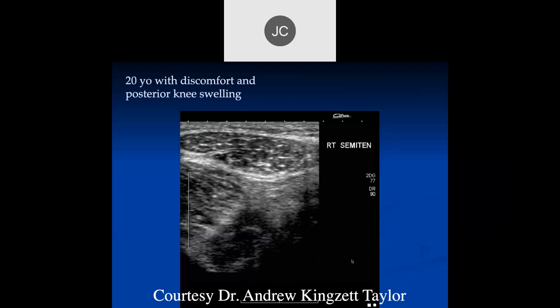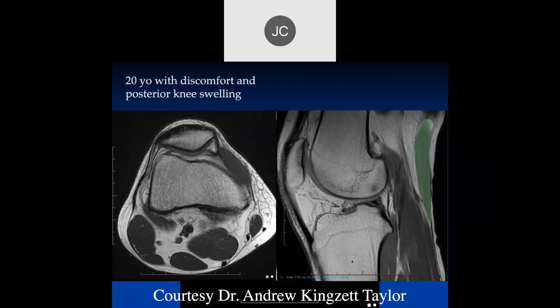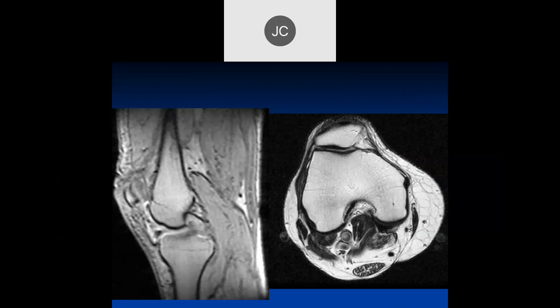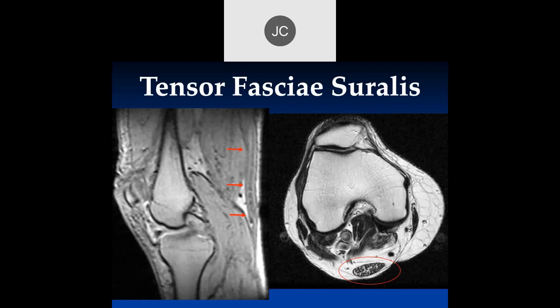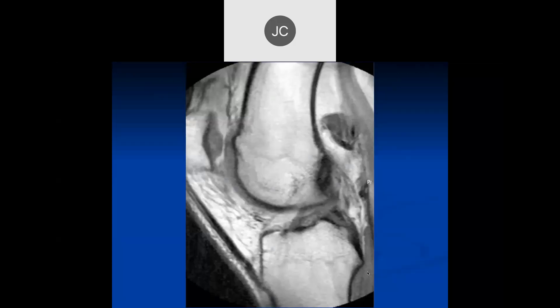It's important to differentiate pathologic from normal variants. It may be embedded into the posterior fascia to help differentiate. On the next case — sagittal and coronal of the knee — there's something similar: an accessory muscle coming down into the fascia, with a little bit of fatty atrophy. This is another tensor fasciae suralis muscle.